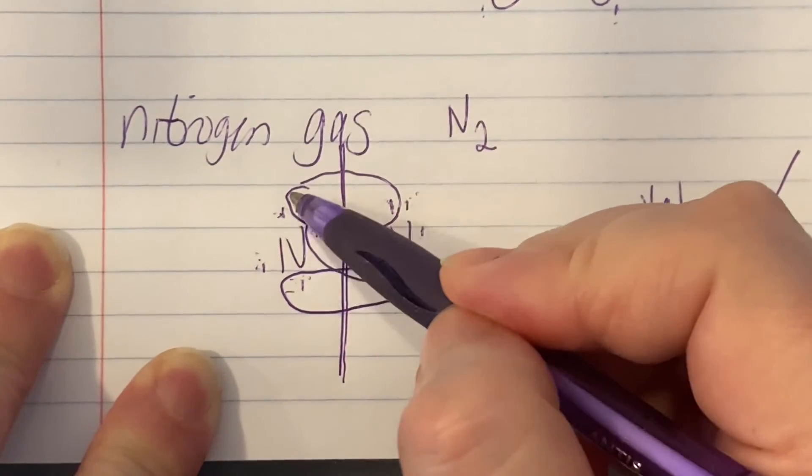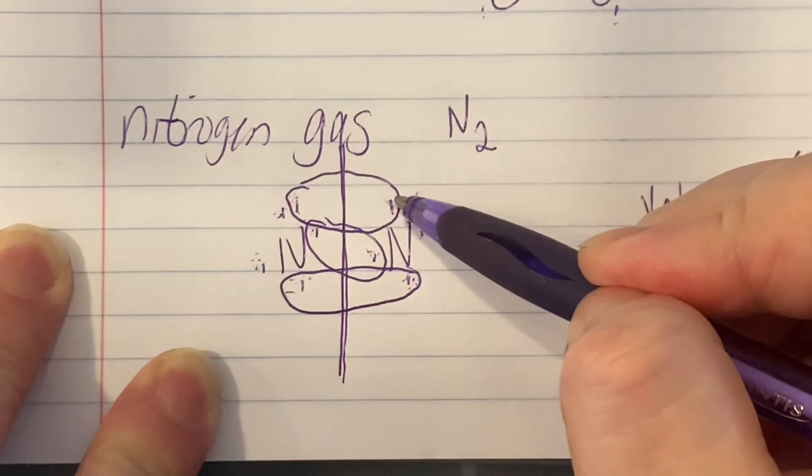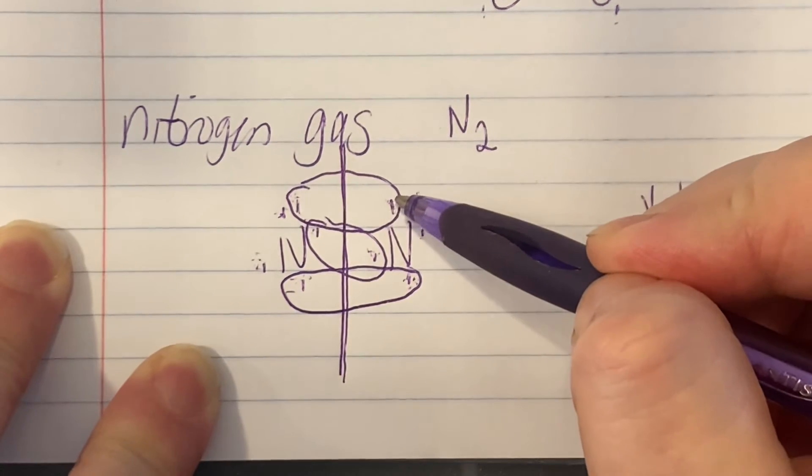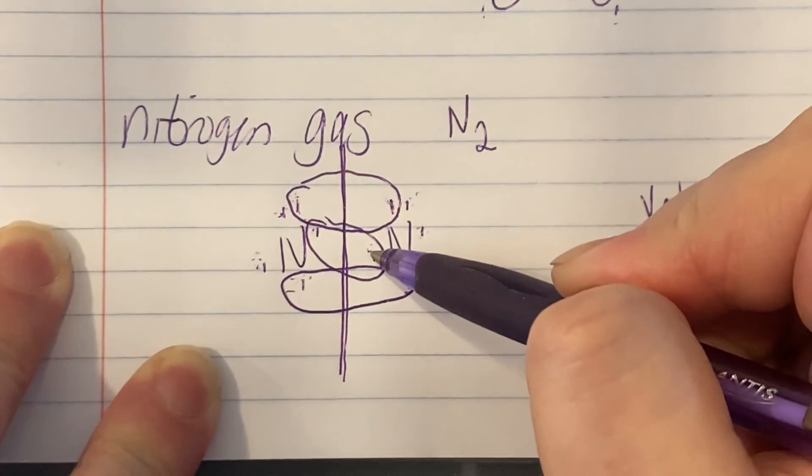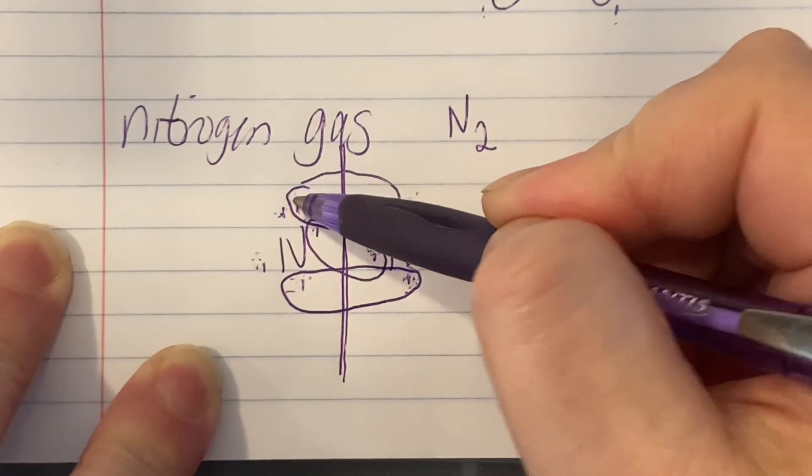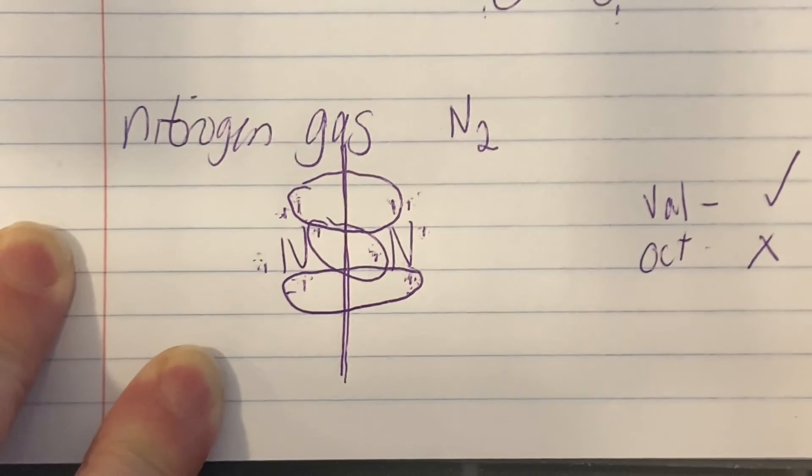And you take the valences 1, 2, 3, 4, 5, plus whatever is in the oval on the other side, 6, 7, 8. 1, 2, 3, 4, 5, plus what's in the oval on the other side, 6, 7, 8. So my octet is good.